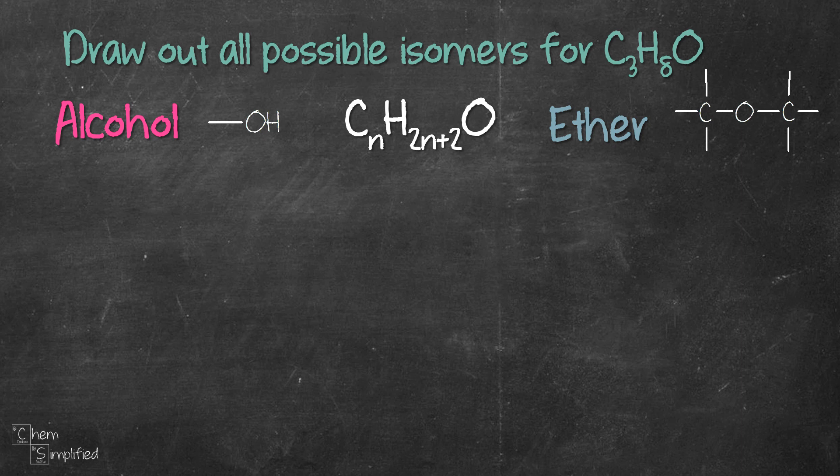We're gonna use a systematic way of drawing the isomers, that way we won't accidentally leave out any structures. So let's start by drawing a three carbon chain, meaning three carbons connected straight in a row. Then we place OH at the first carbon, that will give us our first structure.